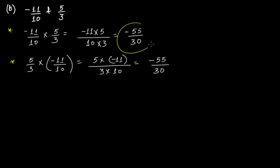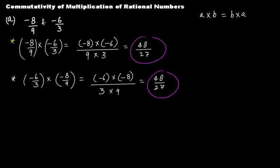So -55/30 and -55/30. In both these two cases doesn't matter whether you multiply a times b or b times a, actually we are getting the same result. So from this example and from this example we can say that yes, multiplication of rational numbers is commutative.